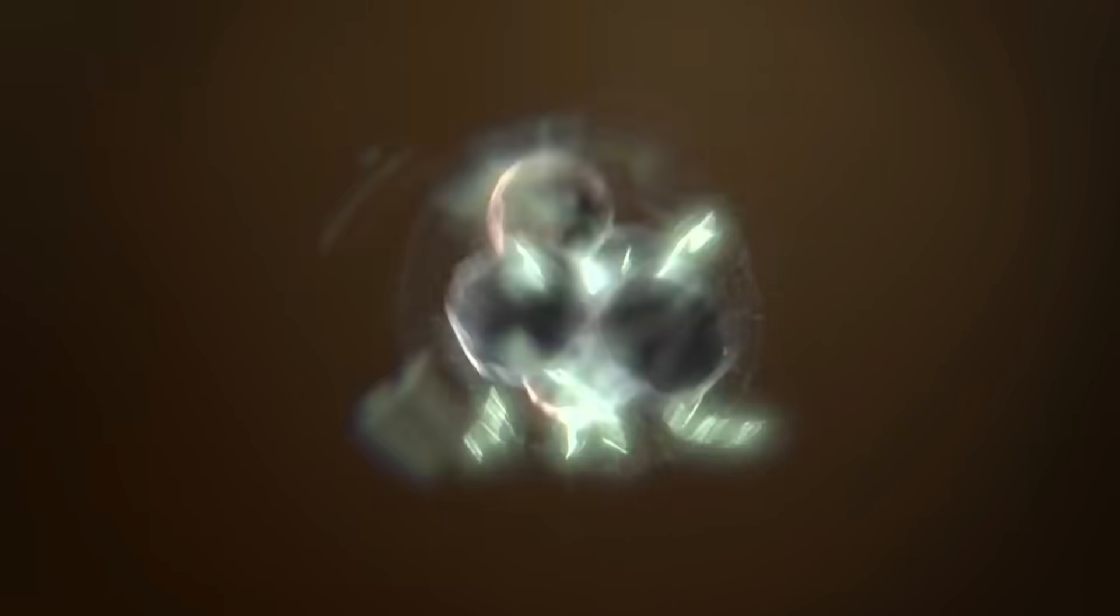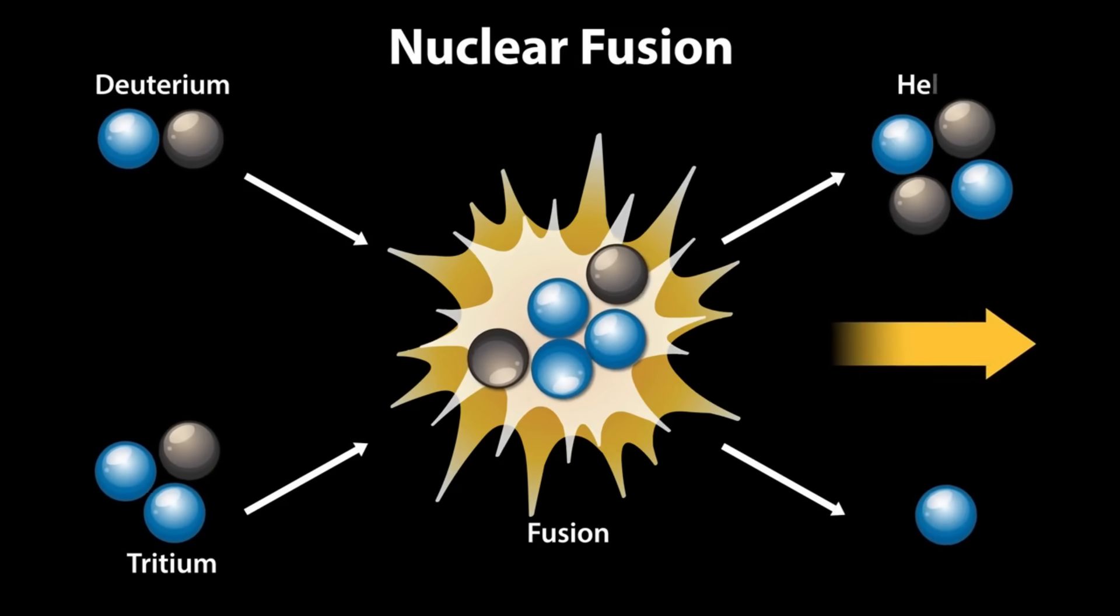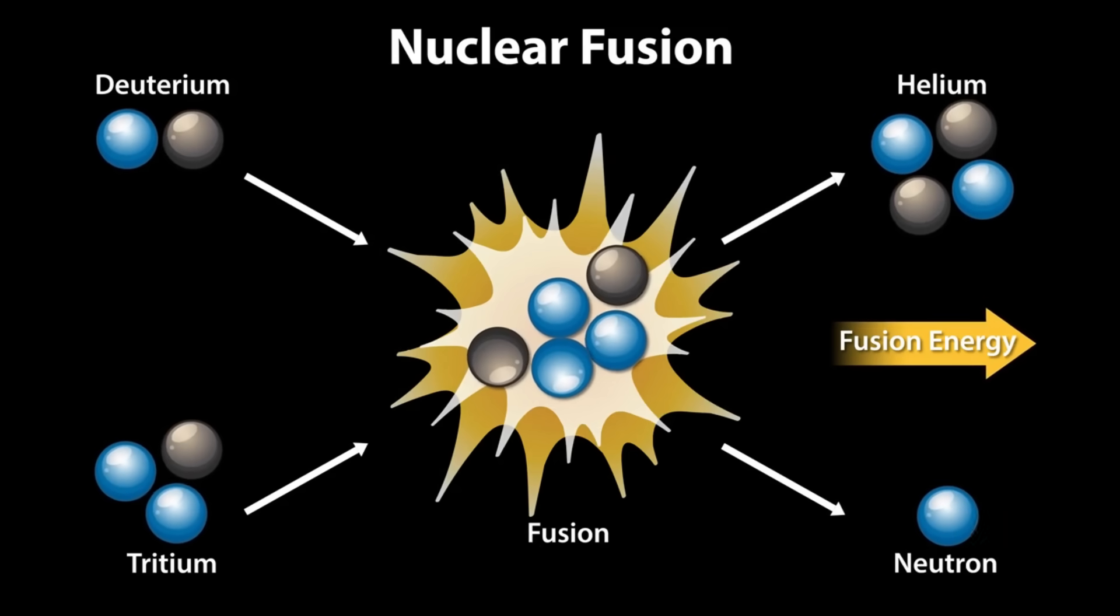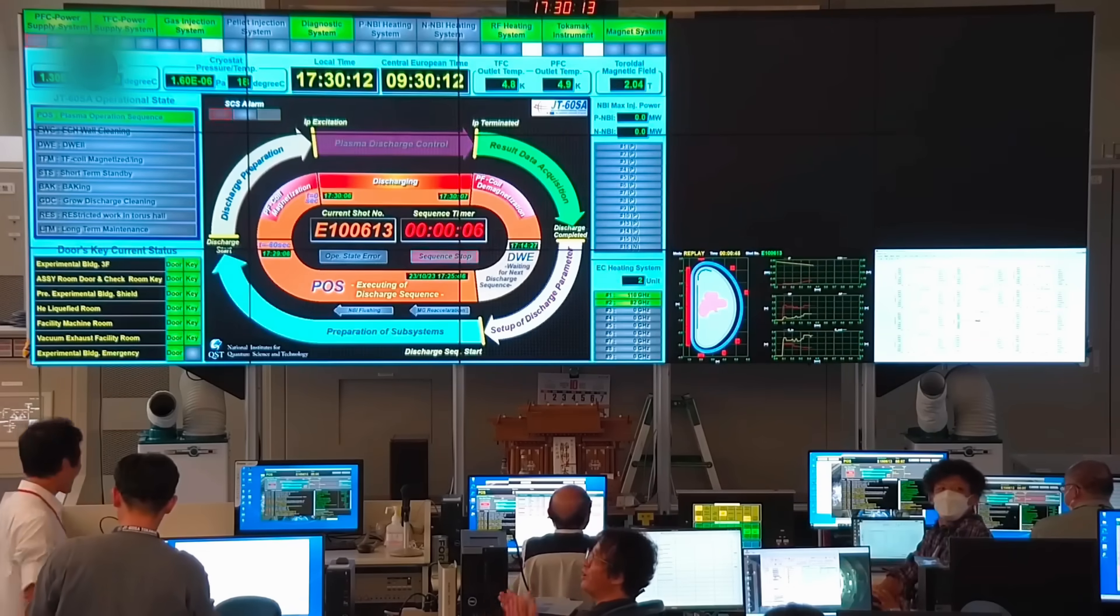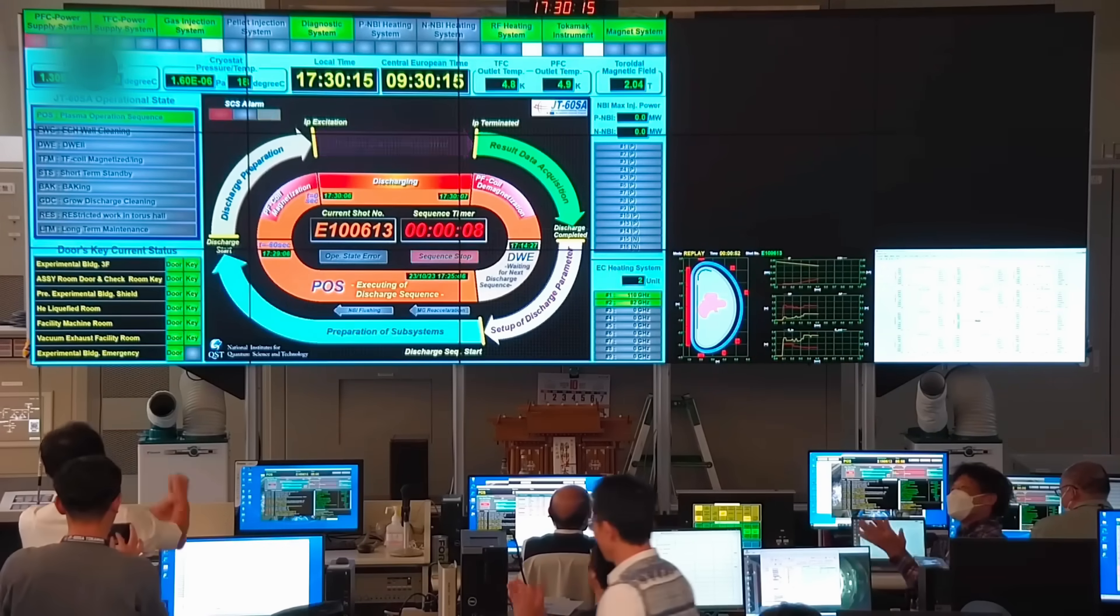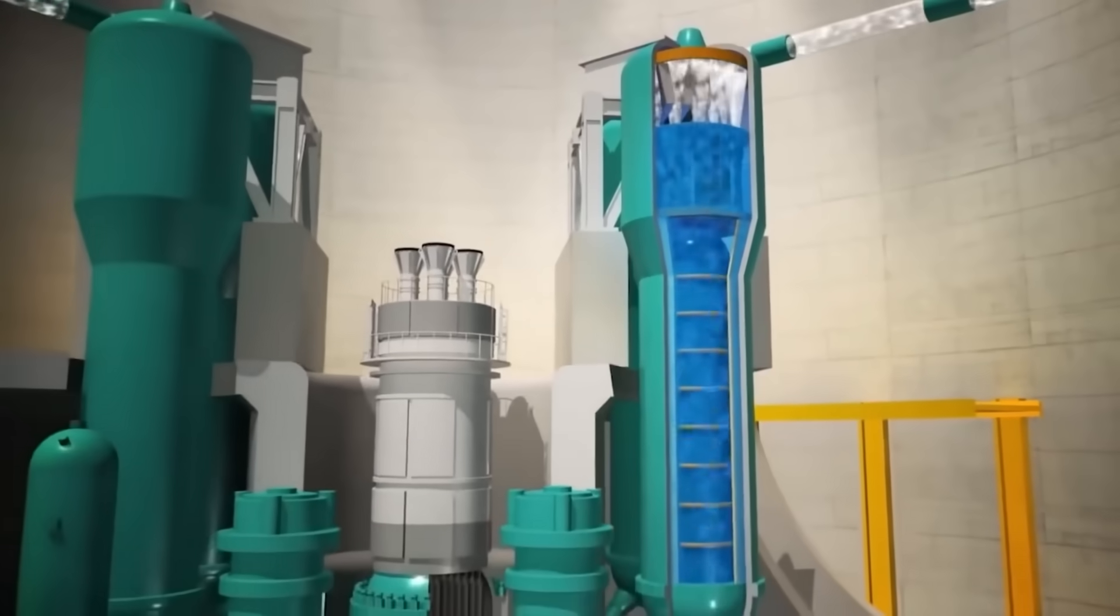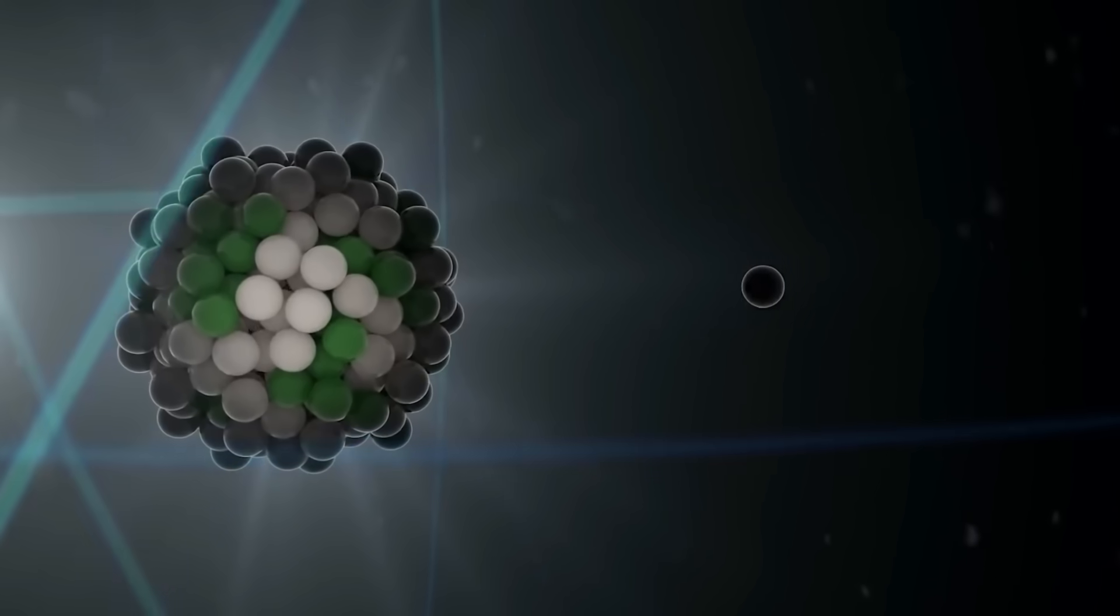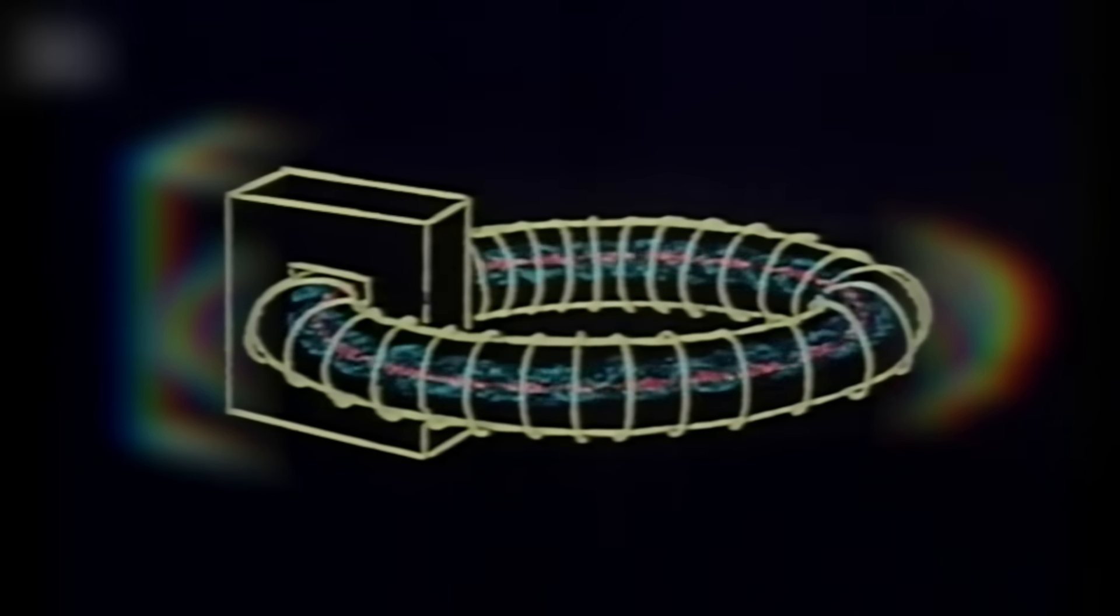Neutron detectors inside the reactor suddenly registered unprecedented activity. These particles, born from successful fusion reactions, started appearing in patterns that defied prediction. The technical team froze, watching their monitors light up. The plasma itself began behaving strangely. Temperature and density fluctuations appeared that didn't match any known confinement mode in four decades of fusion research. Sensors showed energy containment doubling in microseconds.